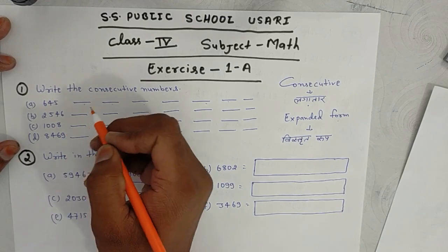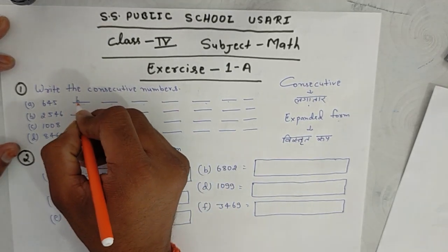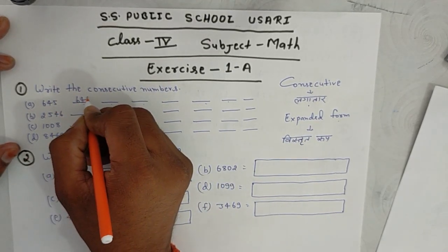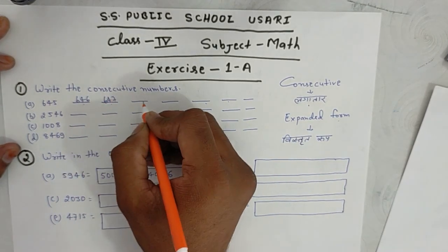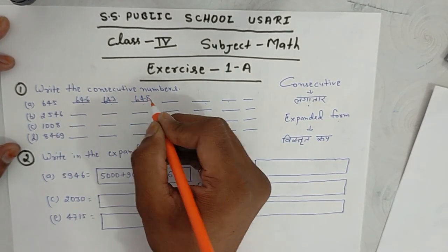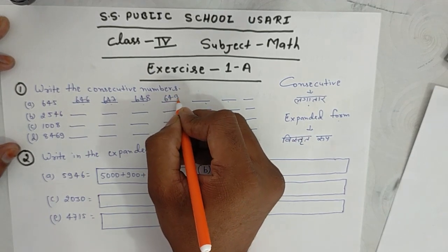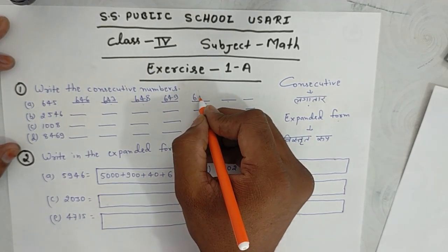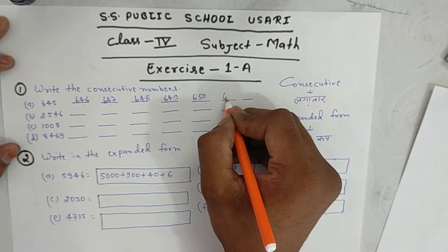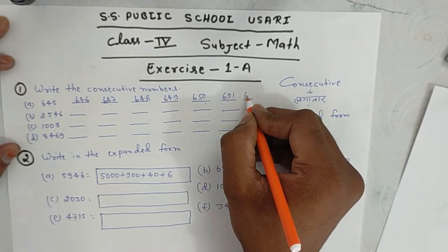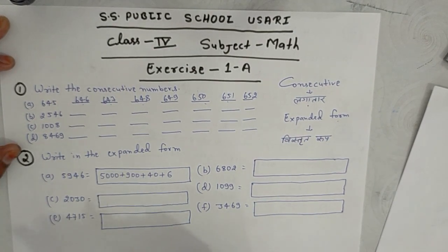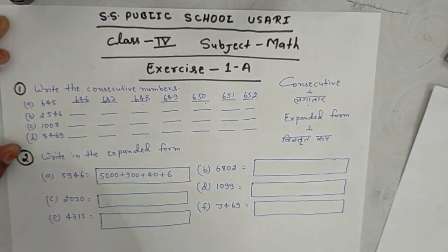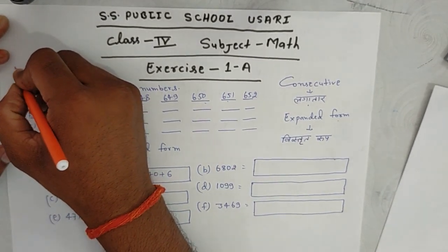645 is followed by 646, 647, 648, 649, 650, 651, 652. This is how to fill consecutive numbers.